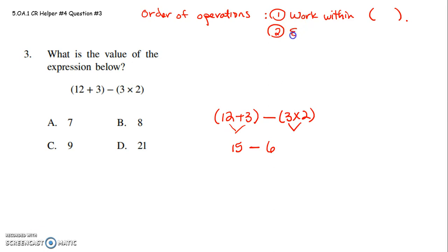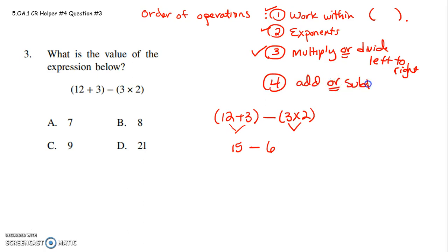Second step is always to handle any exponents. Well, the good news is you don't have any exponents. Third step is to multiply or divide left to right. You always do that, left to right. Multiplication and division happen at the same level. All right, we don't have any multiplication or division. So our last step is to add or subtract left to right.